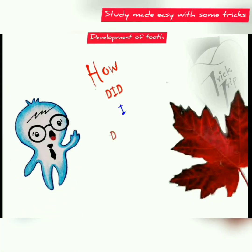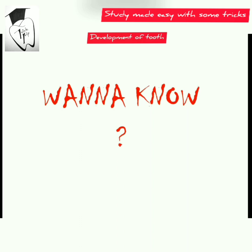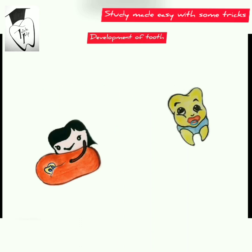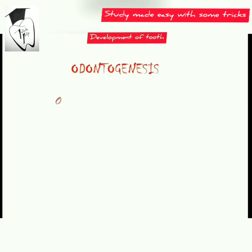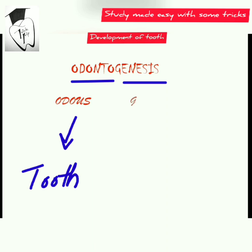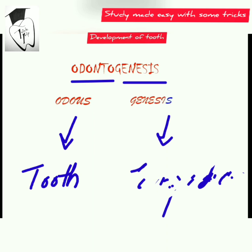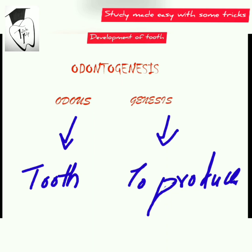Here we'll discuss how the tooth develops. The development of the tooth is called odontogenesis, which is derived from the Greek words — 'odonto' meaning teeth and 'genesis' meaning to produce.